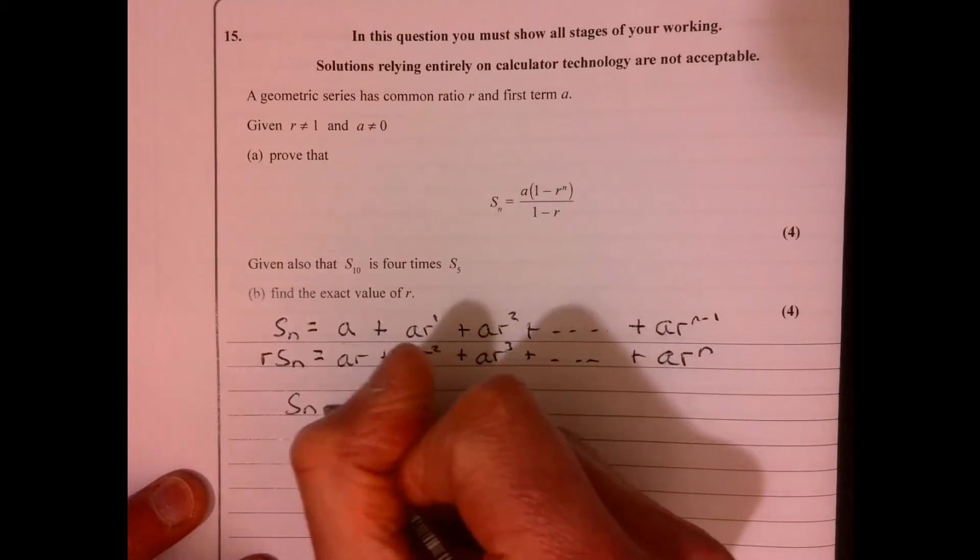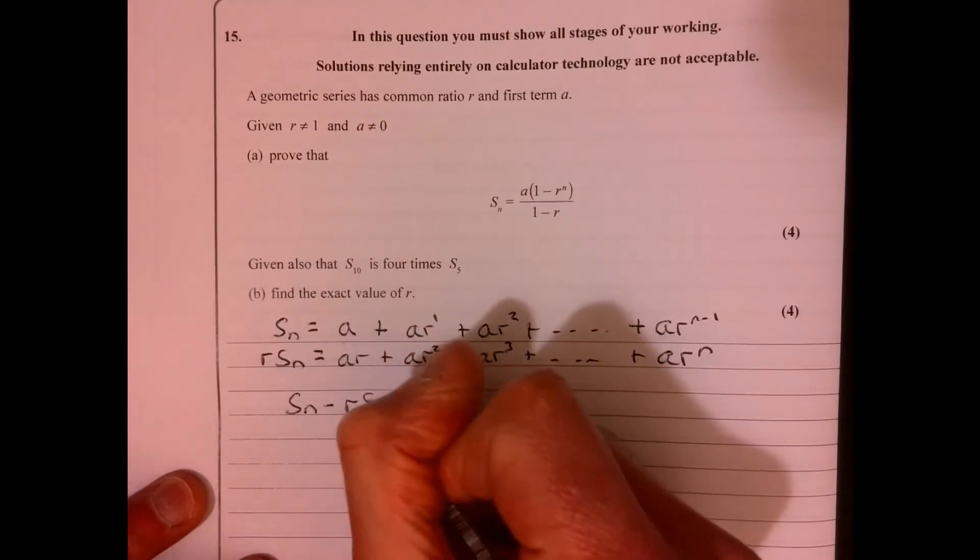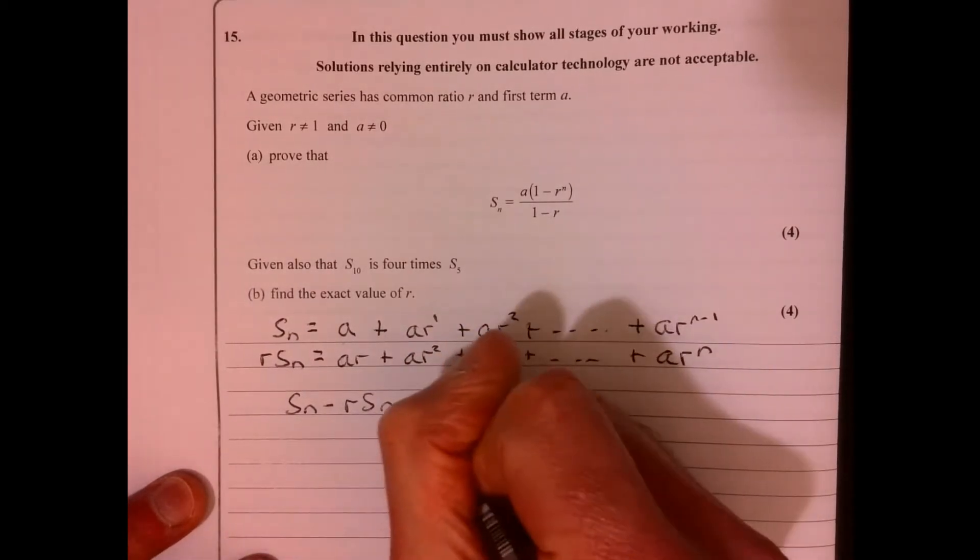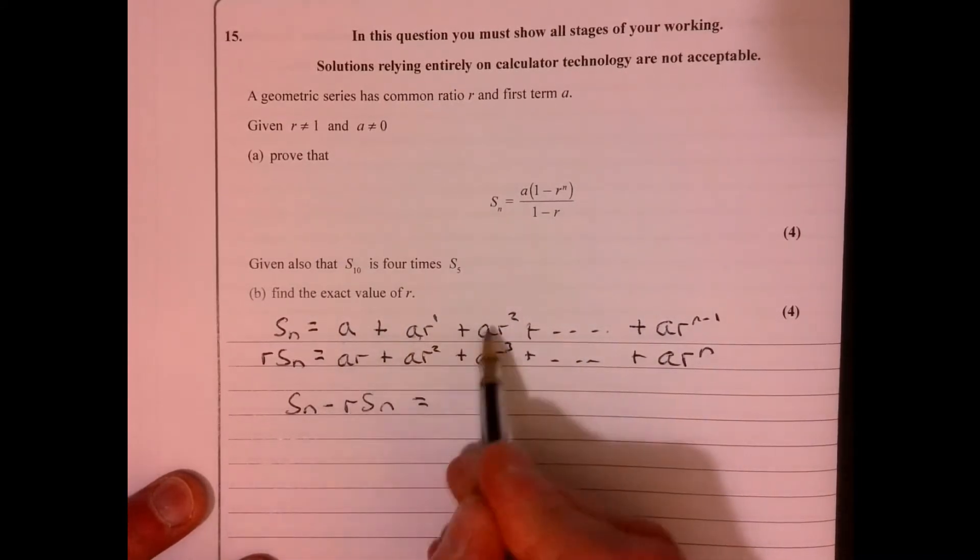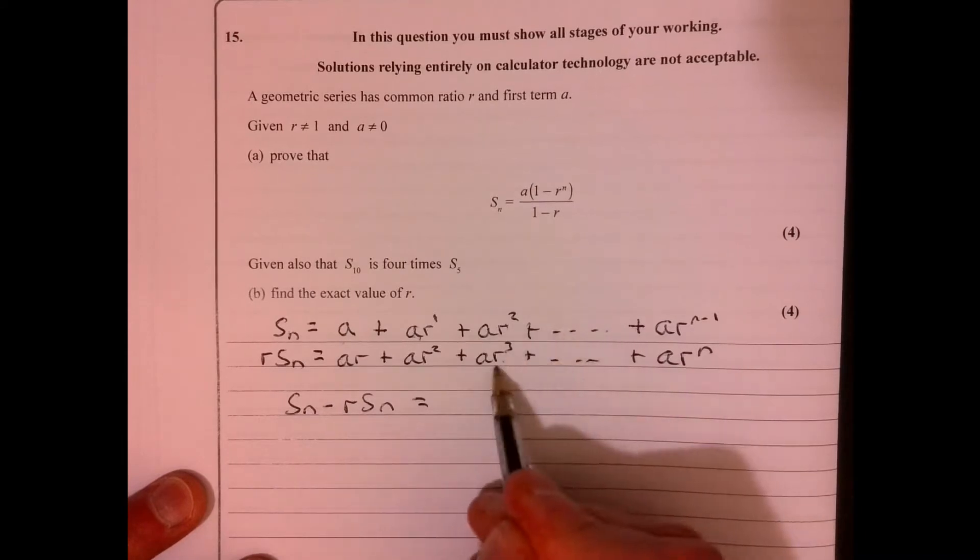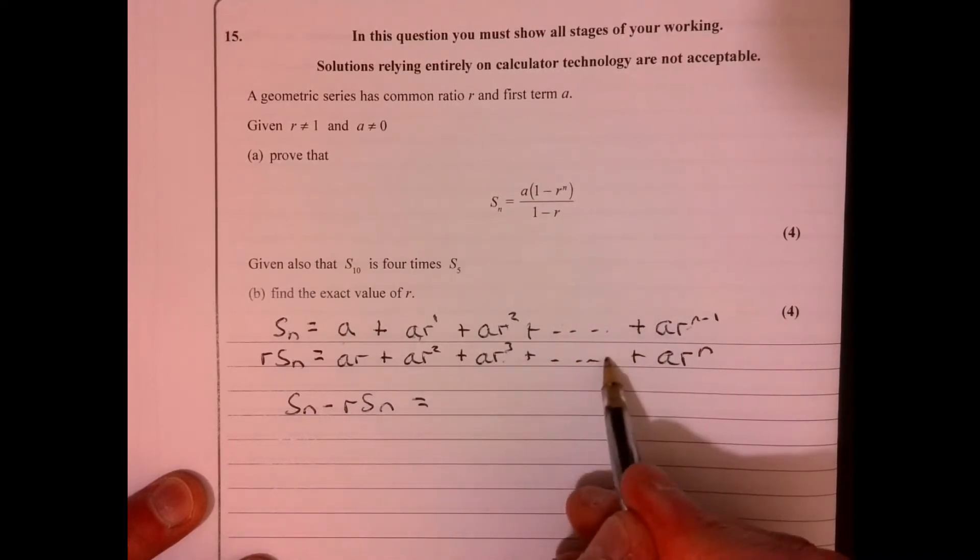Right, let's just write it down. Take away this one. What are you going to end up with? So look, that one would cancel with that one, that cancels with that one, that would cancel with that one, and so on and so on, that would cancel with the one before.